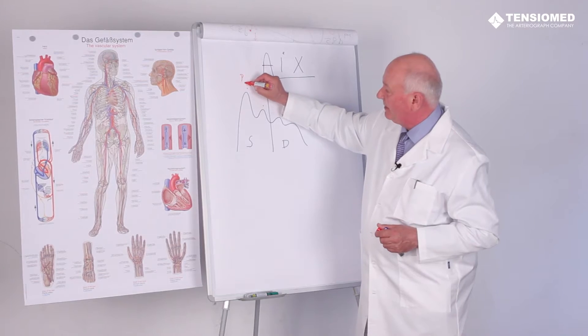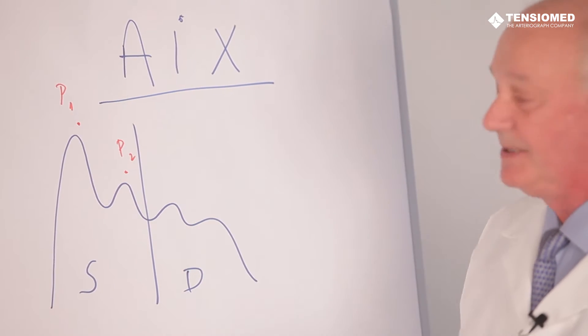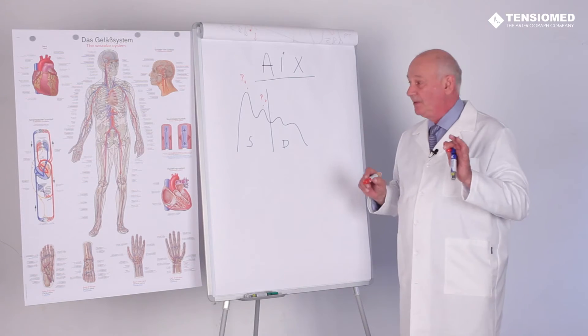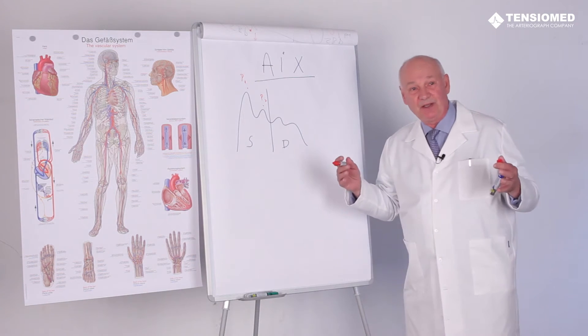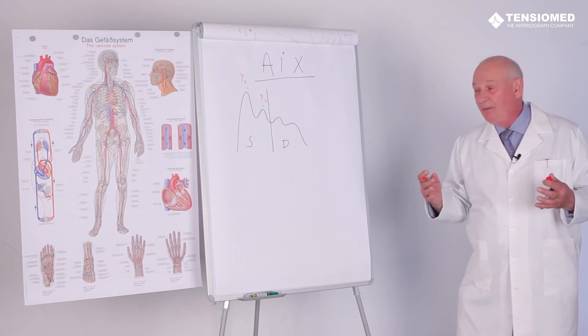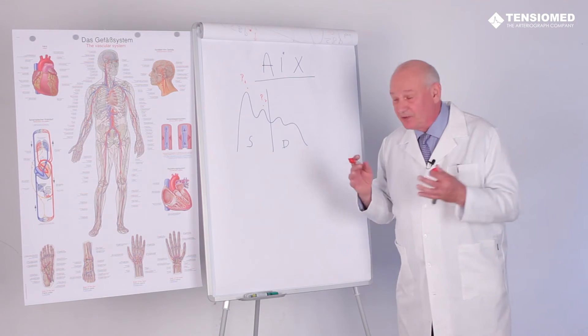We can call it P1, pressure one, and pressure two in the systole. Please take it into your mind that this is still inside the systole, that means the aortic valve is still open and the left ventricle is in contraction.